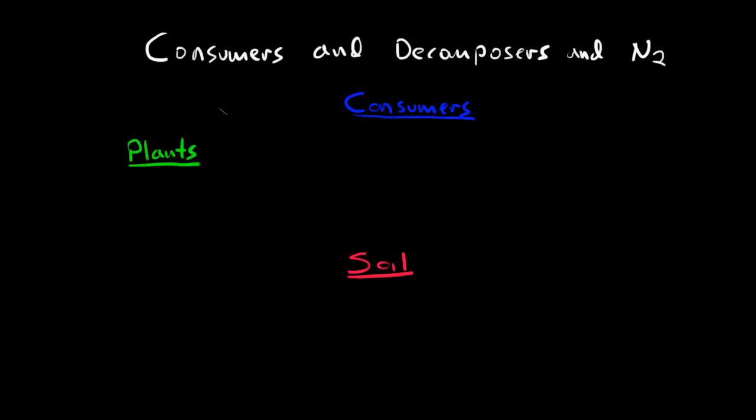This lesson on Consumers and Decomposers and Nitrogen is about the difference between consumers and decomposers, adding the term detritivore, and in particular, looking at how this fits into the nitrogen cycle and the recycling of matter, linking back to what we saw in Chapter 1.